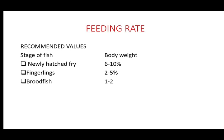The feeding rate is the percentage of the fish's average body weight, and we have some recommended values. For newly hatched fry: 6 to 10% body weight. For fingerlings: 2 to 5% body weight. For brood fish: 1 to 2% body weight. To use a single feeding rate value, we must take the mean of each range, since these values are ranges and not single numbers.